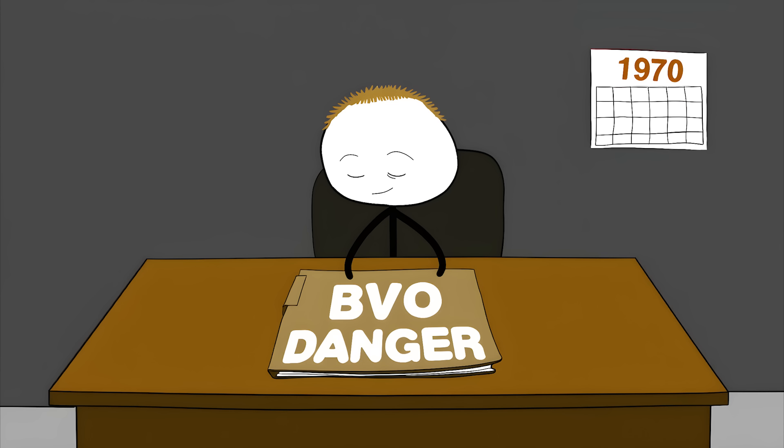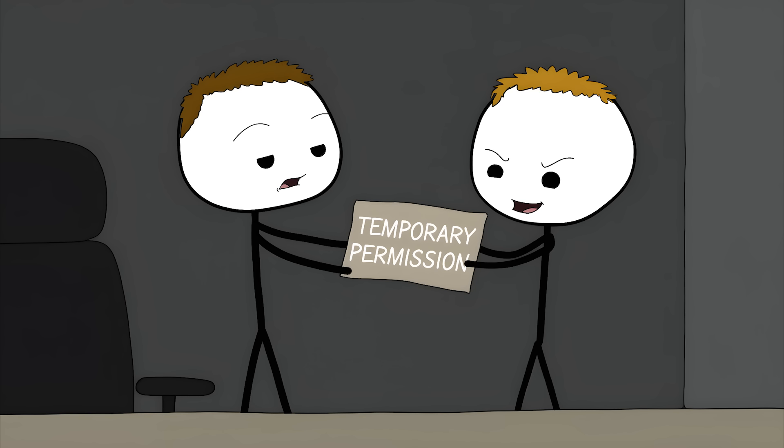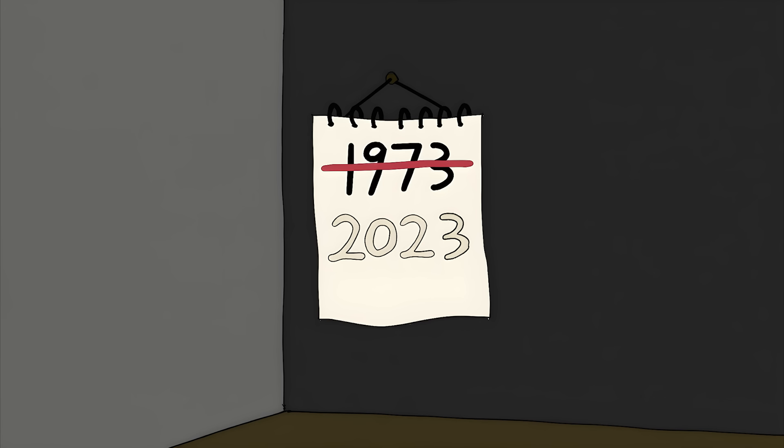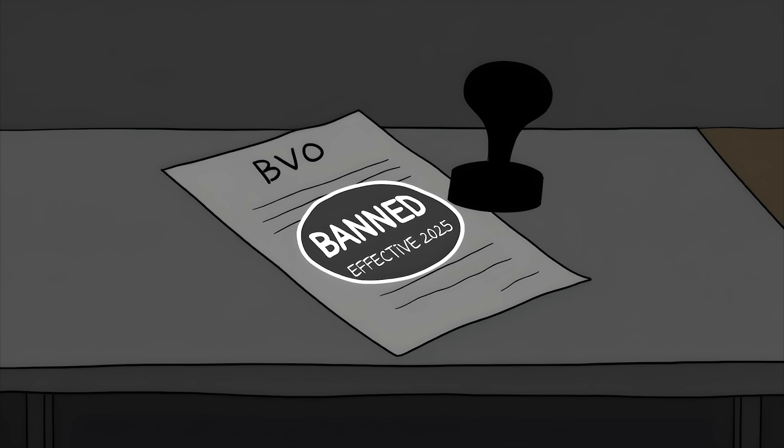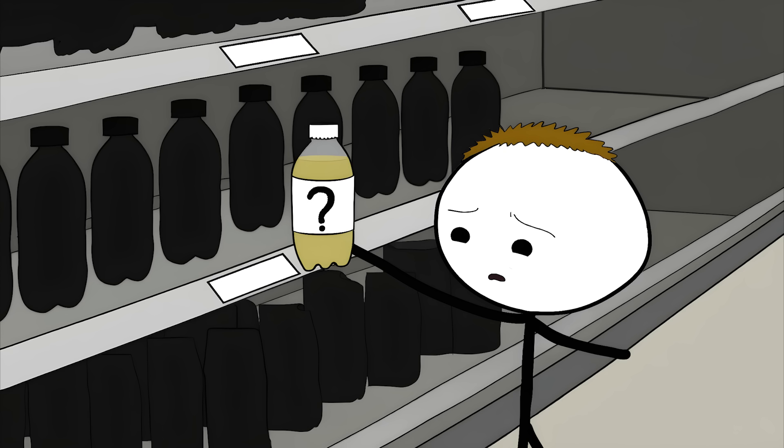The FDA knew about potential issues with BVO since the 1970s. They took it off their generally-recognized-as-safe list, but instead of banning it, they let companies use it temporarily while they studied it more. That temporary permission lasted over 50 years. Finally, in late 2023, the FDA proposed a ban, giving companies until 2025 to phase it out. You could still be drinking it right now. Most big soda companies have already switched to other ingredients, but it's still out there.